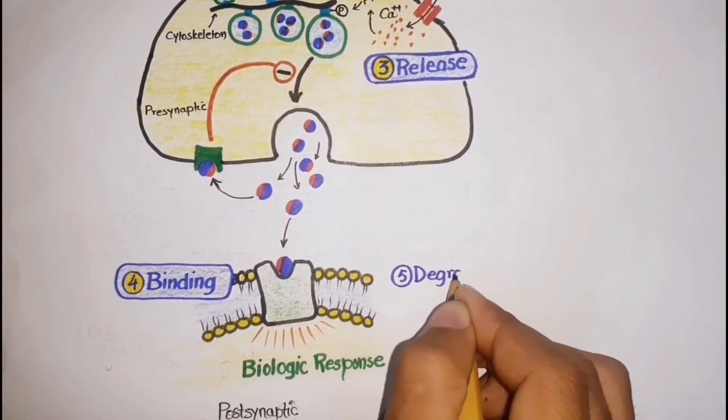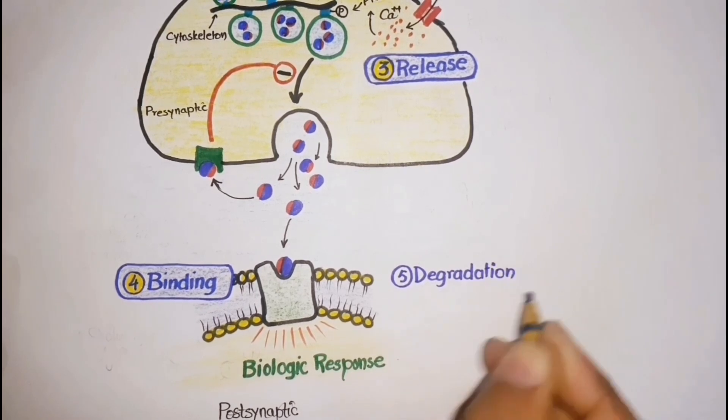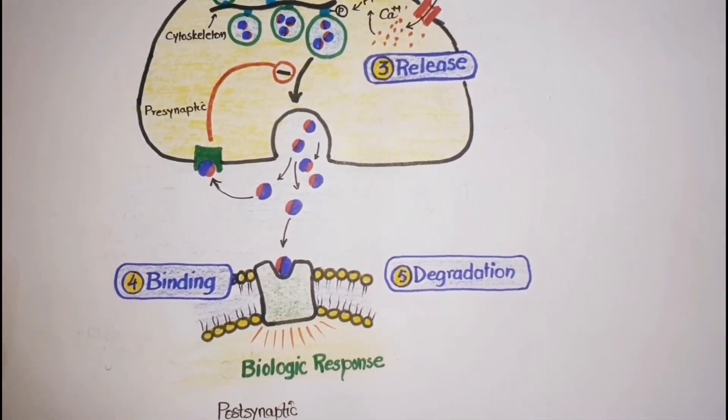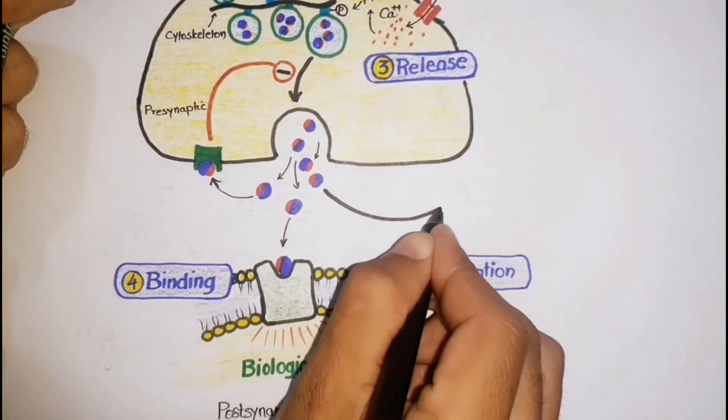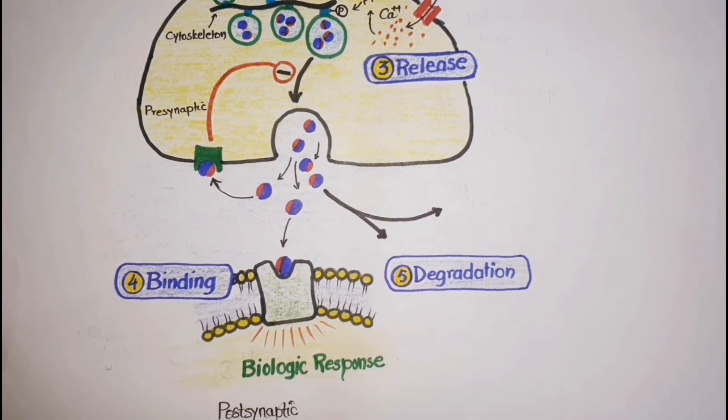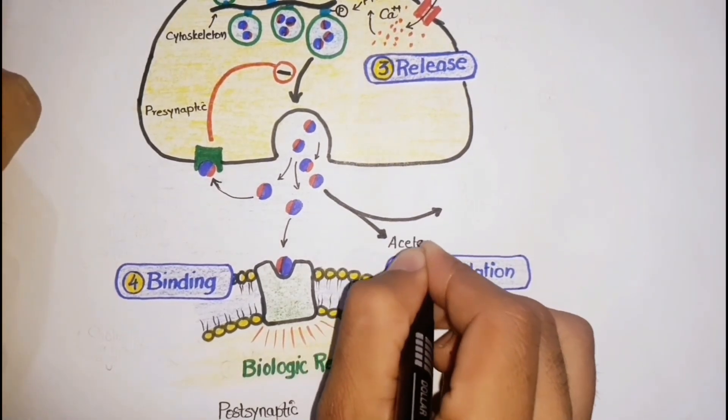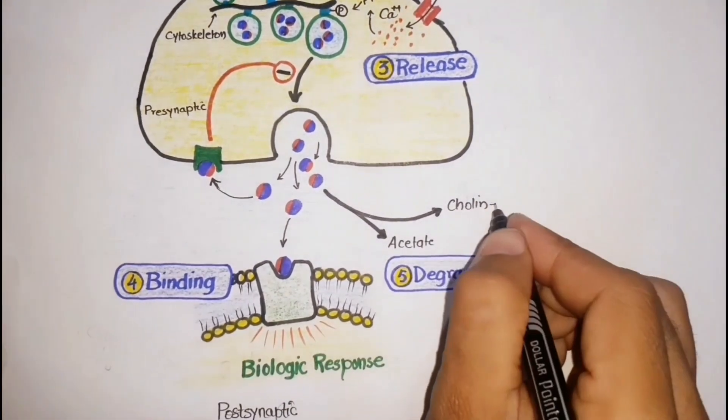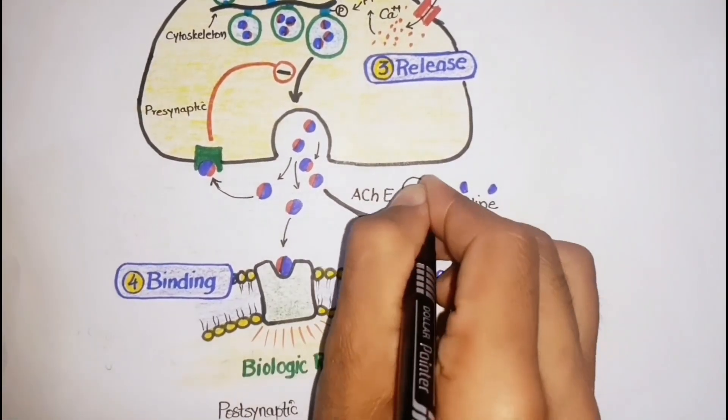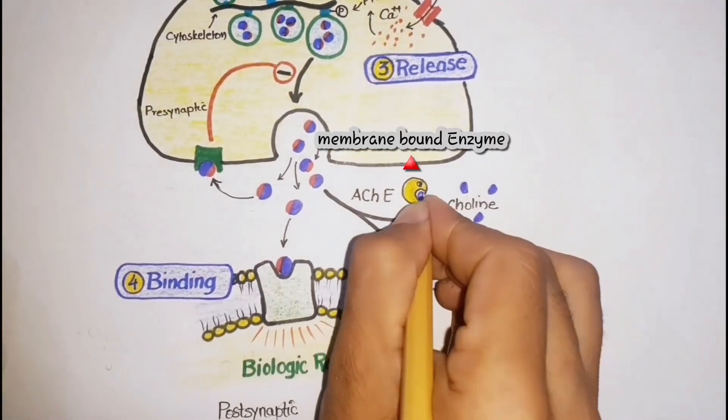The next step is the degradation of acetylcholine. The signal at the postsynaptic effector site is rapidly terminated because acetylcholine is rapidly metabolized into choline and acetate by the action of acetylcholinesterase, which is found in the synaptic cleft.